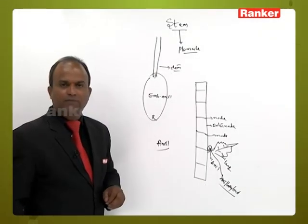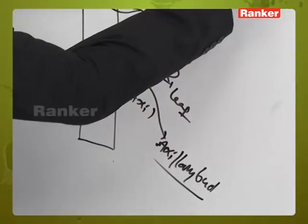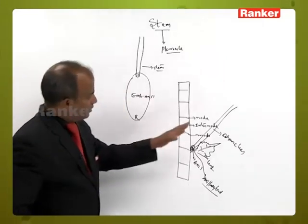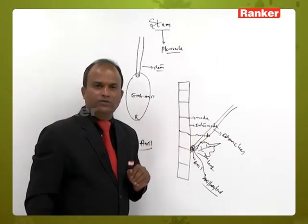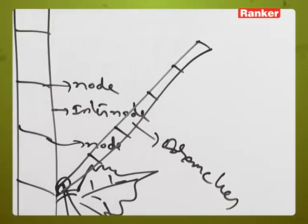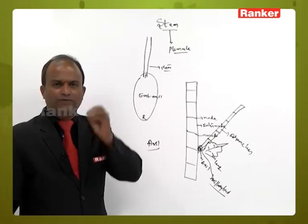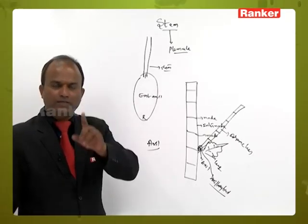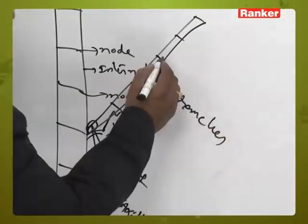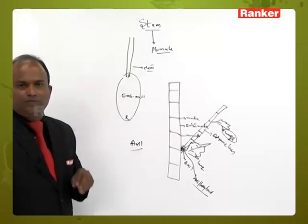The axillary bud gives rise to branches. These branches are also differentiated into nodes and internodes. From the nodes of the branches, leaves are also produced.